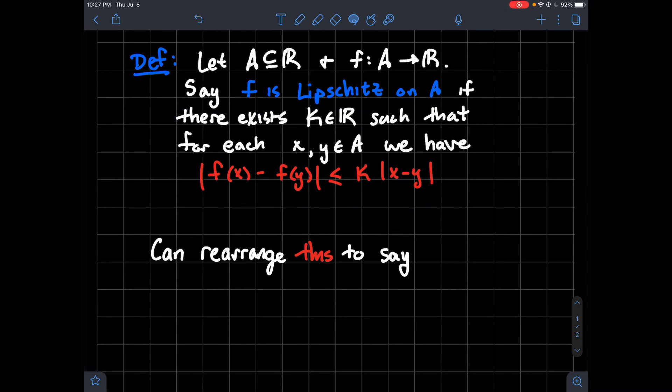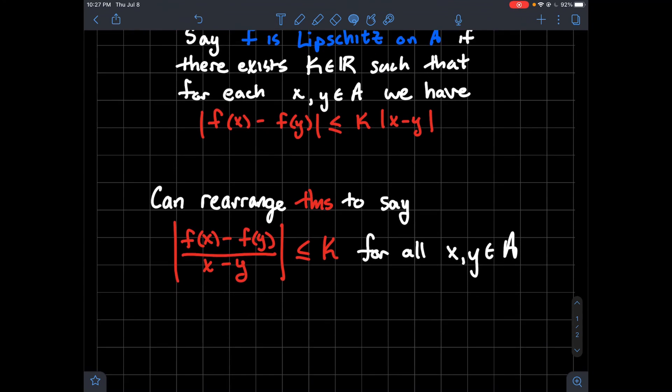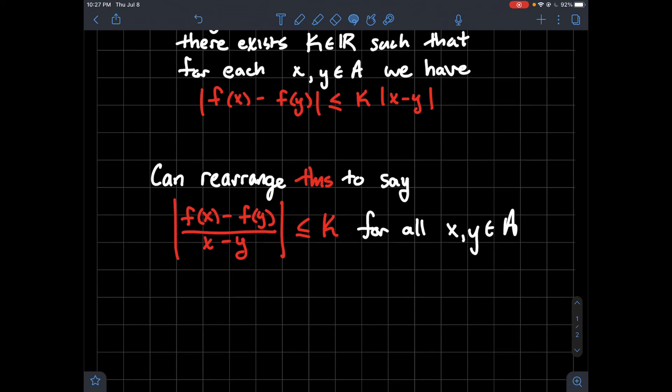What else can we do? We can rearrange that inequality in red to say that if I divide through by absolute value of x minus y, assuming x and y are not the same, that tells me the absolute value of the slope of the secant line between the two points x comma f of x and y comma f of y. So the slope of any secant line to f, where you plug in points from A, always has to be between minus k and k. Lipschitz puts some condition on how sloped any of the secant lines can be to your graph along the domain.